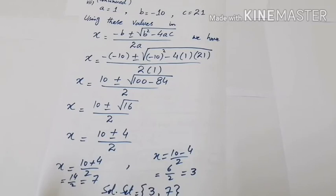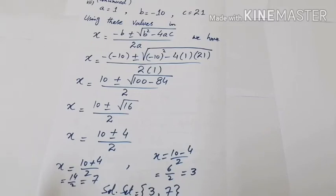Using all these values in the quadratic formula: x = (−(−10) ± √((−10)² − 4·1·21)) / (2·1). In the next step: x = (10 ± √(100 − 84)) / 2 = (10 ± √16) / 2. That gives x = (10 ± 4) / 2.